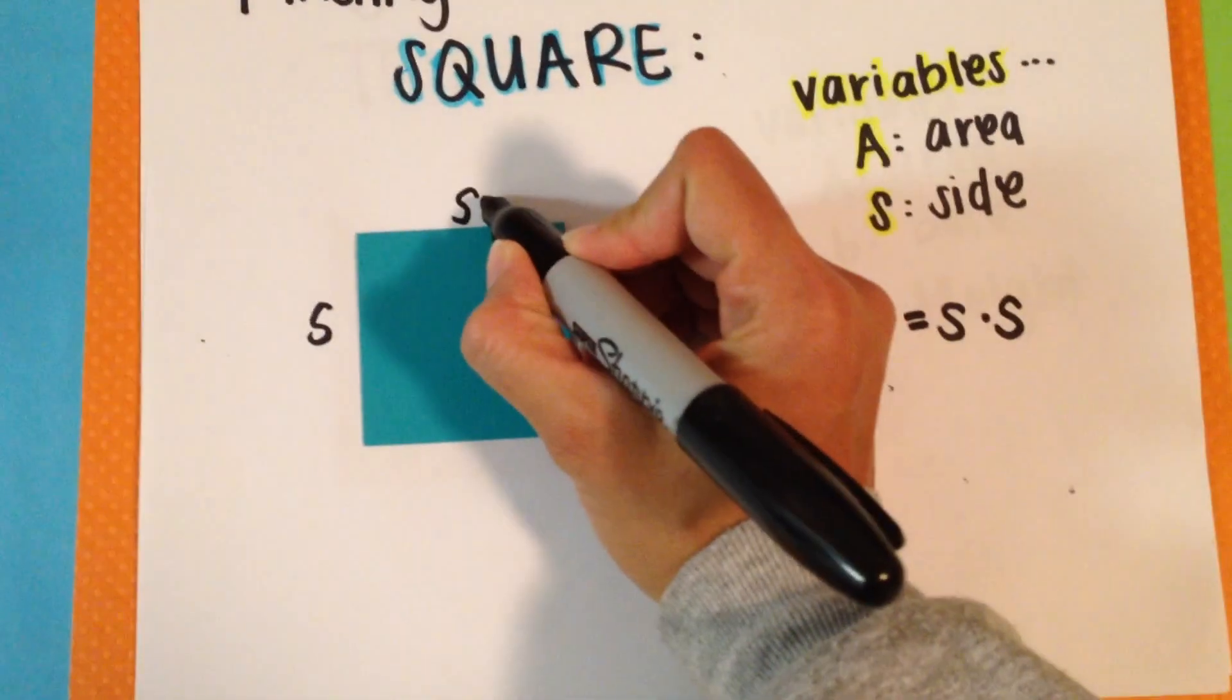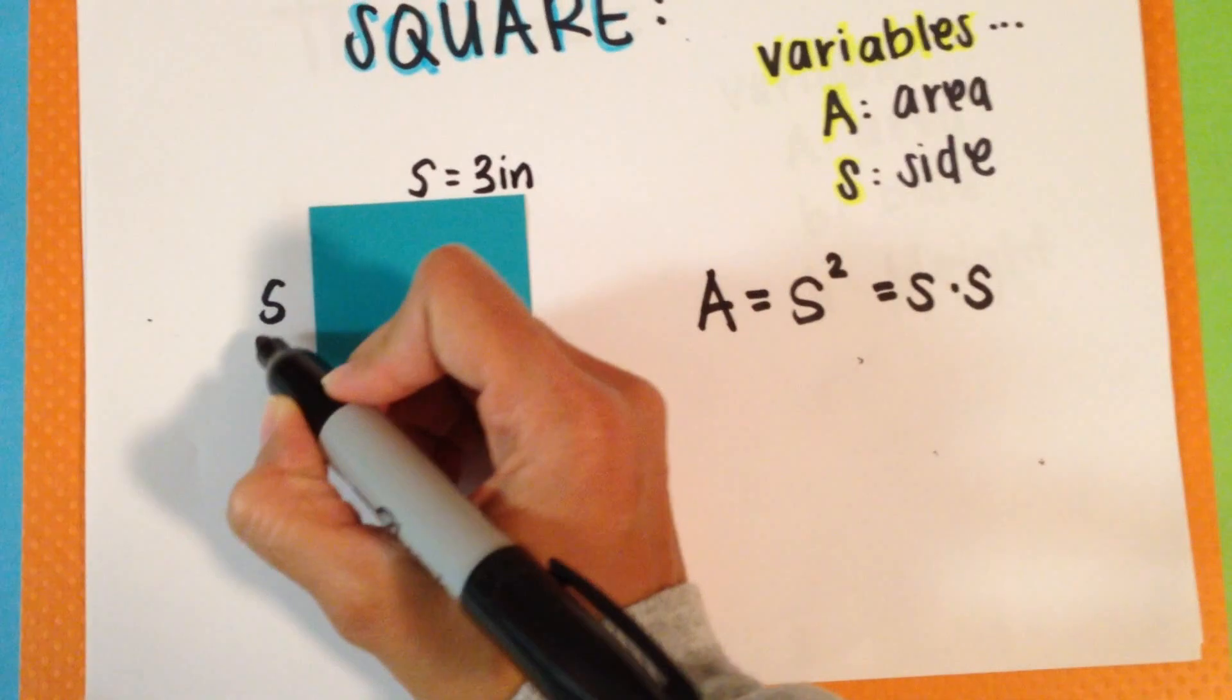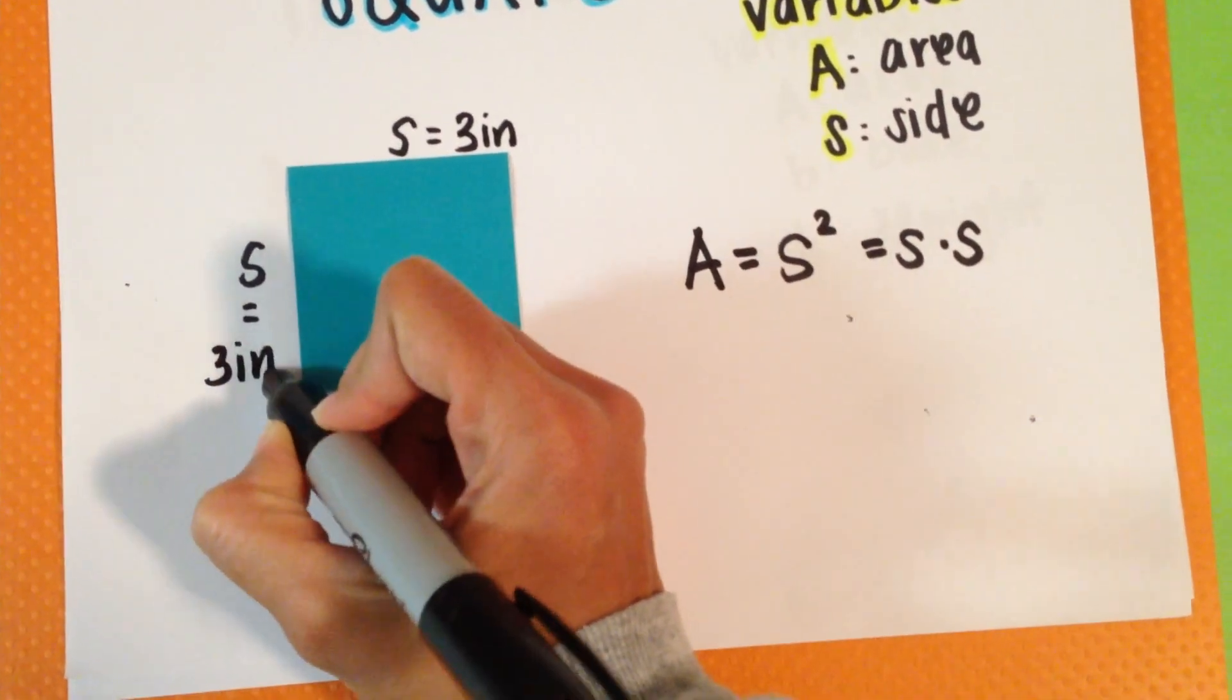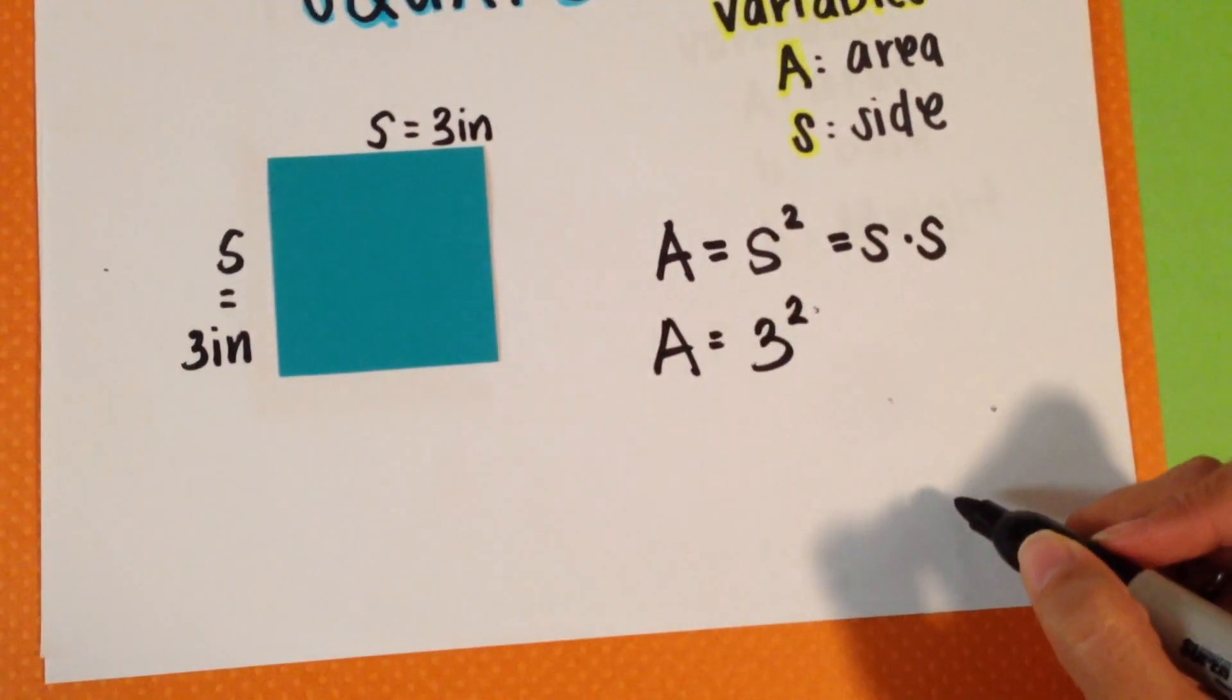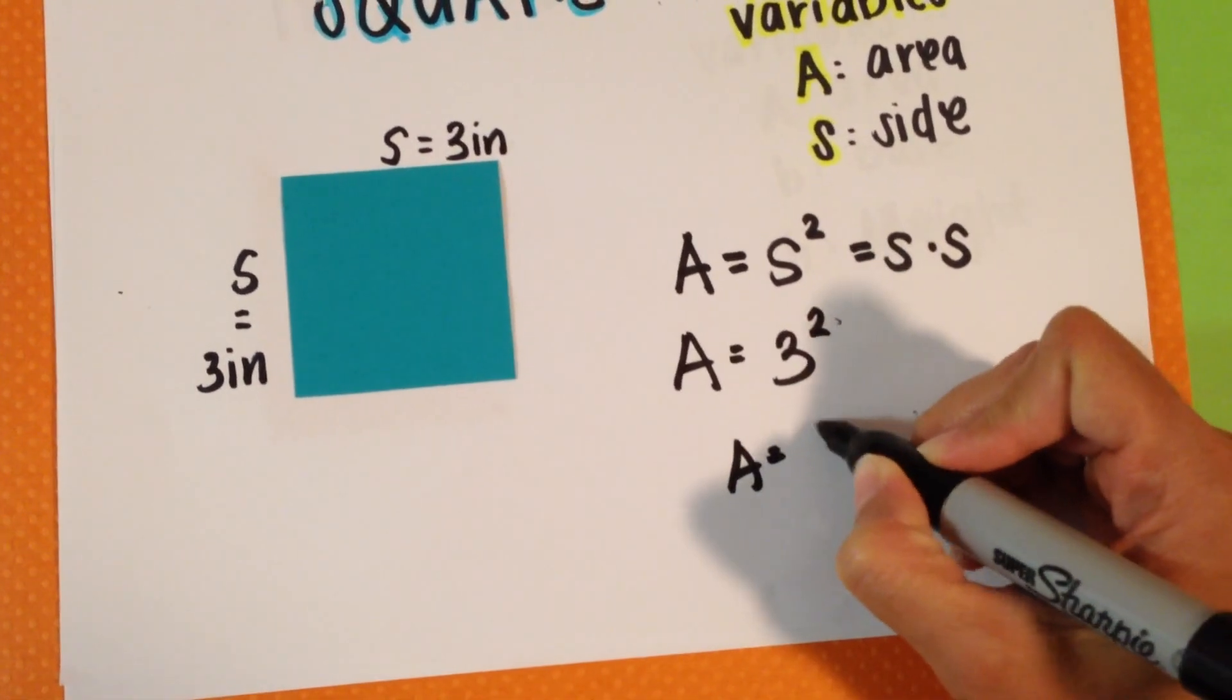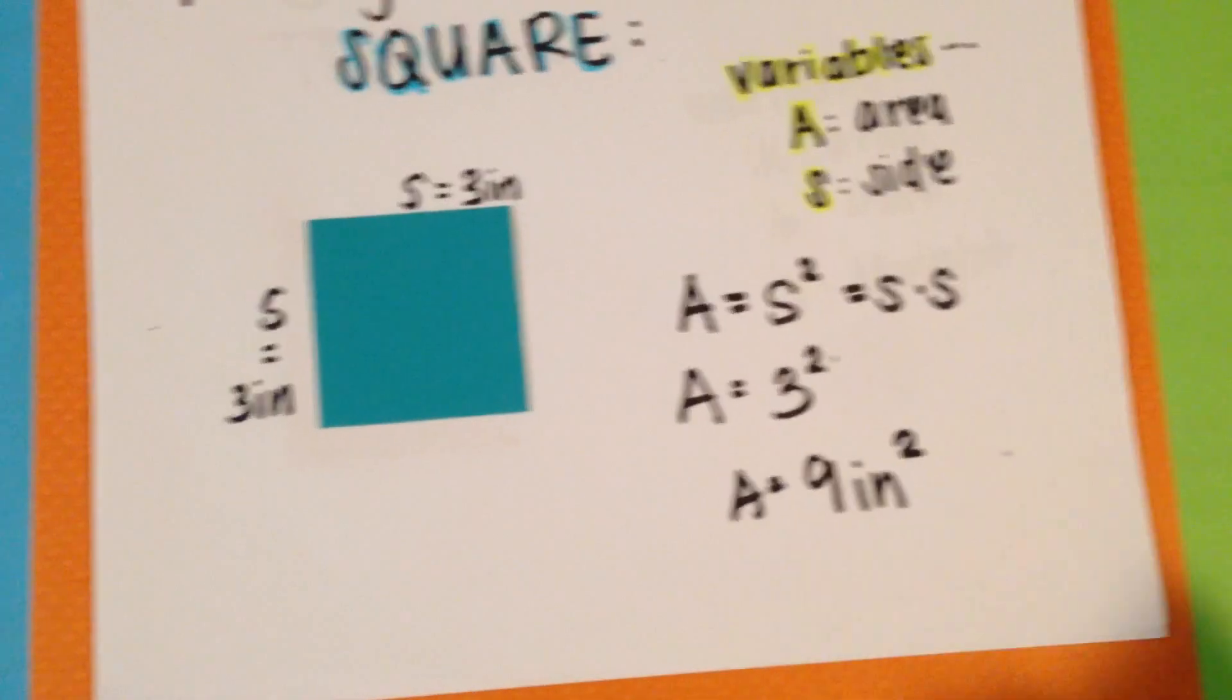So say we had a side of 3 inches. This side will also be 3 inches. The area will be 3 squared, which is 9, don't forget your units, inches squared.